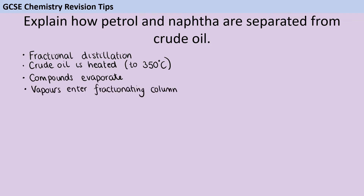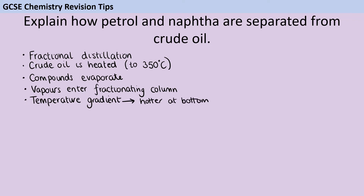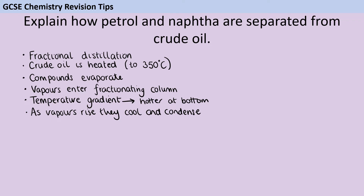That column is going to be much hotter at the bottom, near the heat source, and cooler at the top — what we call a temperature gradient. Although if you've just described it rather than using the term 'temperature gradient', that's fine too. As these vapors rise up, they cool down and gradually condense, turning back into liquids.